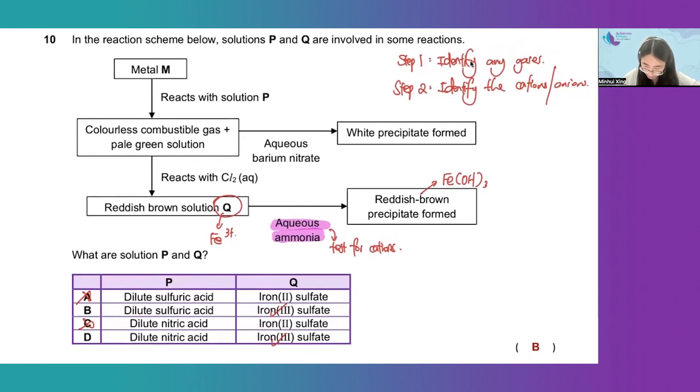Metal M reacts with solution P and produces colorless combustible gas and pale green solution. From the options given, this means that solution P must be an acid.